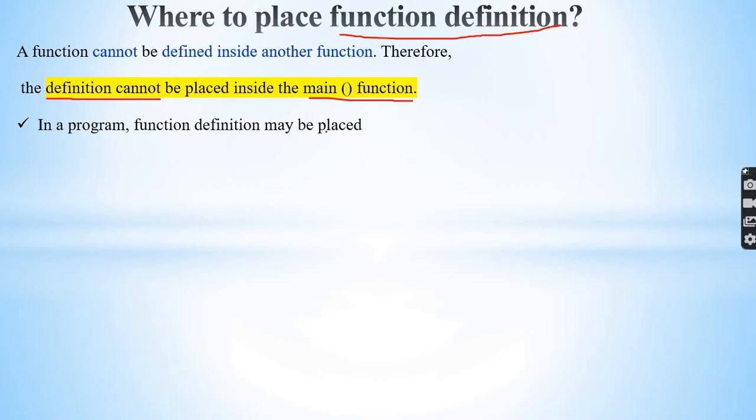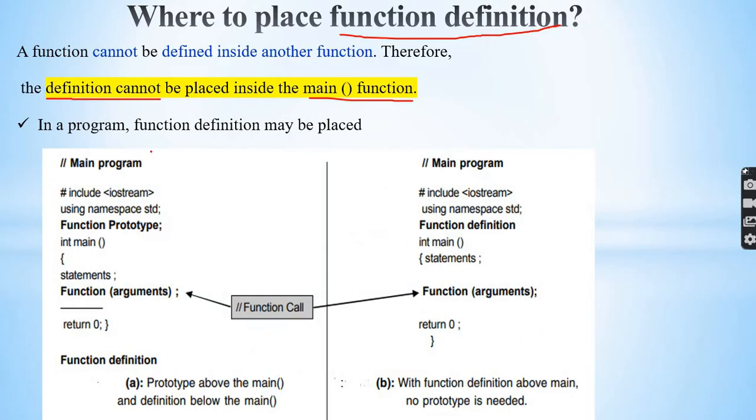In a program, function definition may be placed in this format. There's iostream, using namespace std, then the function prototype or function declaration, then int main. Inside main function you have statements. Below main function, at the end of main function, you have the function definition. A prototype above the main, and definition below the main.